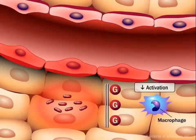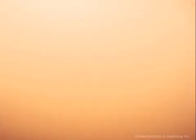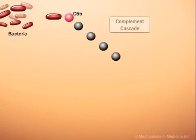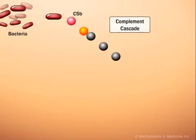However, hyperglycemia results in decreased activation of macrophages, thereby arresting the process of macrophage phagocytosis of bacteria.